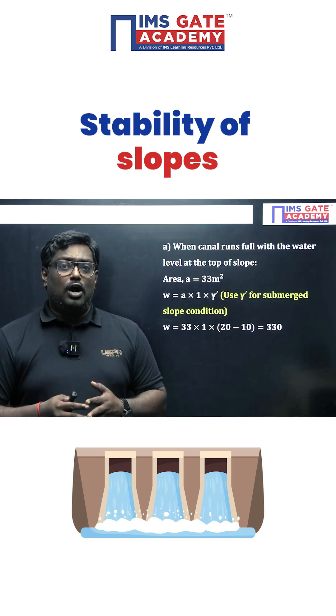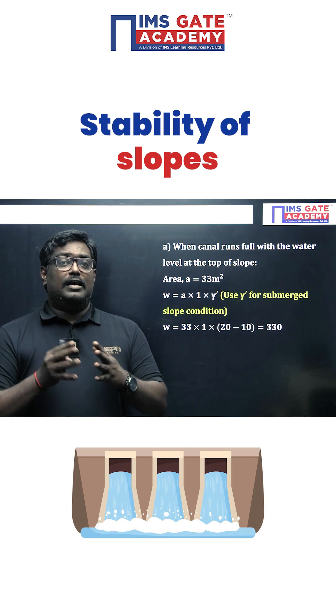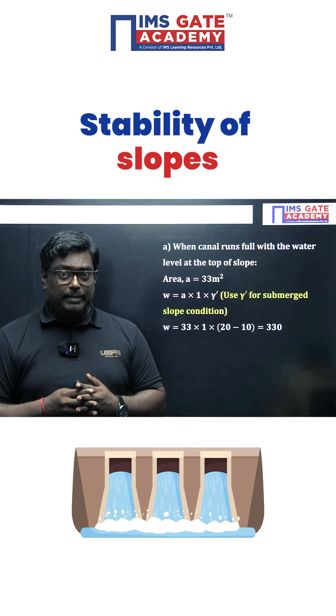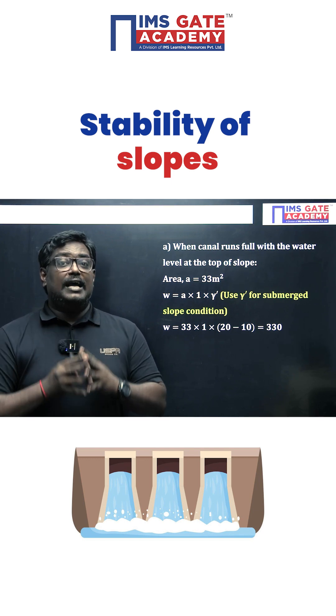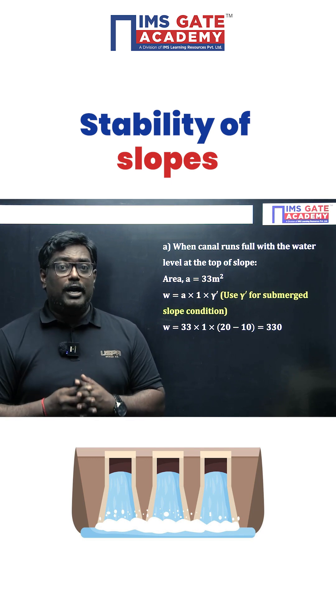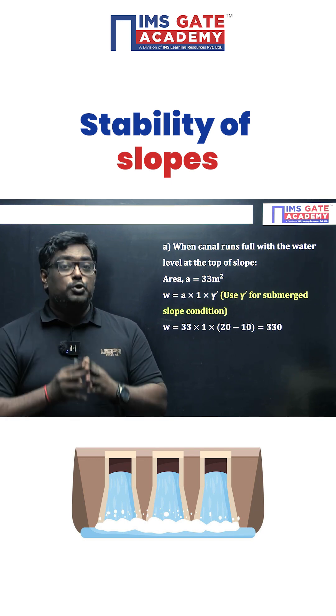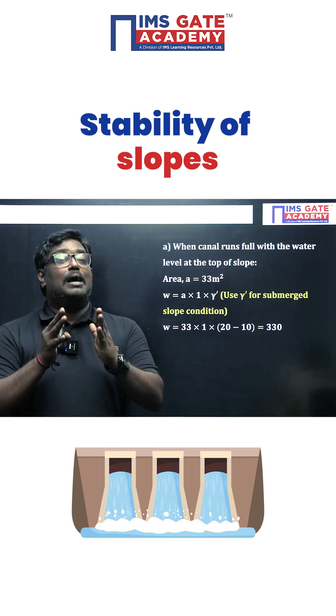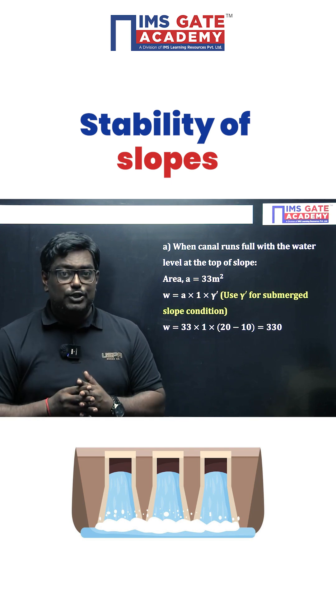When the canal is running fully with water table, here is the important point: you should use gamma dash — the submerged unit weight — instead of gamma sat.